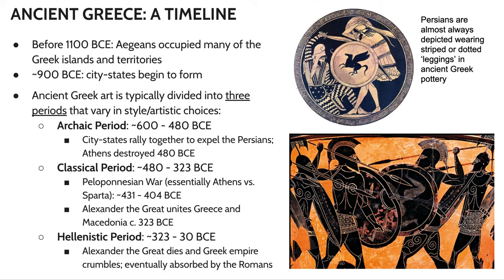Just to give you a super bare-bones timeline of ancient Greece — unfortunately we don't really get to talk about the time before the Archaic period. There are all these fabulous island civilizations that are happening and creating amazing art, and of course we don't get to talk about them, which is sad. But around 900 BCE, we're starting to see these more unified city-states forming.